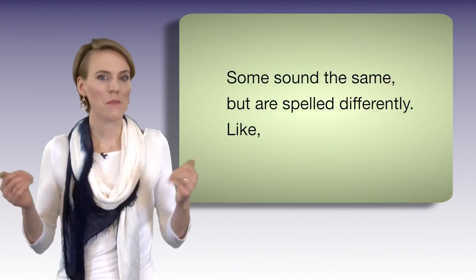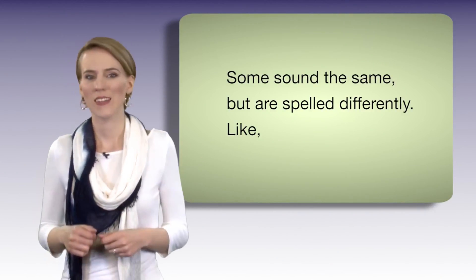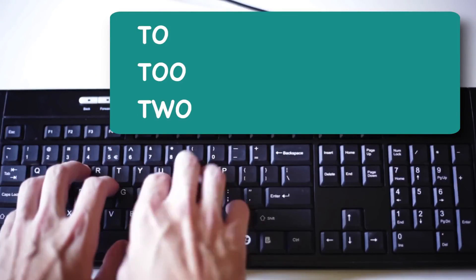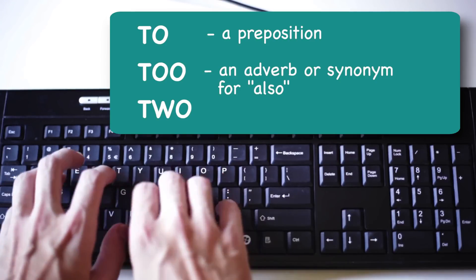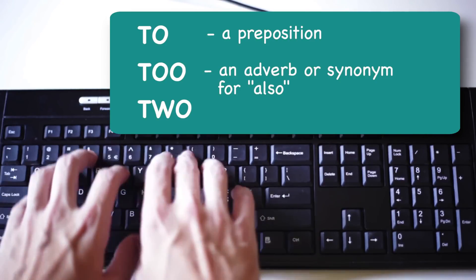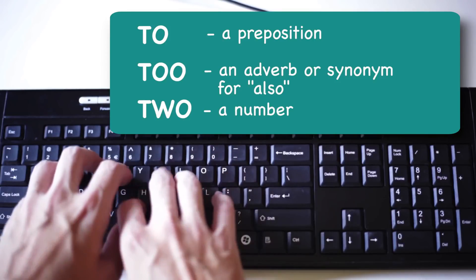Some sound the same but are spelled differently, like to, too, two. One is a preposition. The other is an adverb or synonym for also. And the last one is a number.